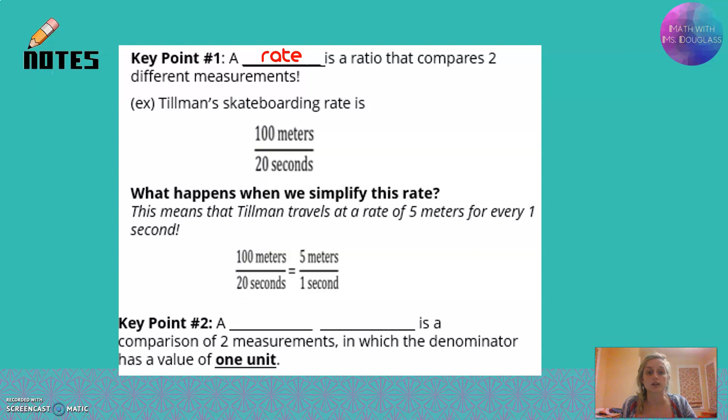We are going to simplify this rate so that one of these units ends up as a 1. So I'm looking at 100 over 20, thinking about what I can divide them both by. If you're not comfortable going straight from 100 over 20 dividing them by 20, you can do it in a couple steps. I always go for, they both end in 0, that means I can divide them by 10.